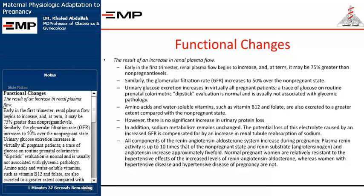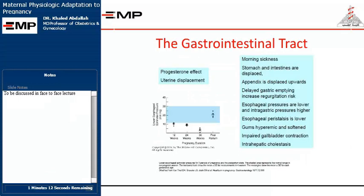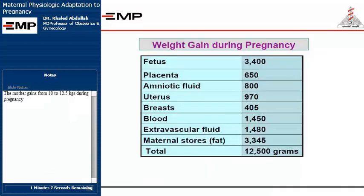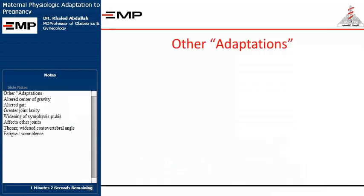Plasma renin activity is up to 10 times that of the non-pregnant state, and renin substrate, angiotensinogen, and angiotensin increase approximately 5-fold. Normal pregnant women are relatively resistant to the hypertensive effects of the increased renin-angiotensin-aldosterone levels, whereas women with hypertensive disease of pregnancy are not. The mother gains from 10 to 12.5 kg during pregnancy.